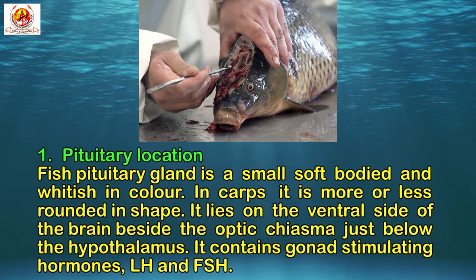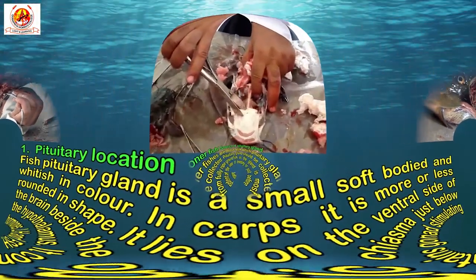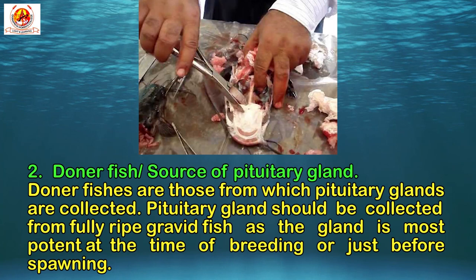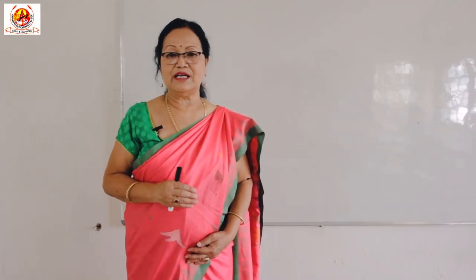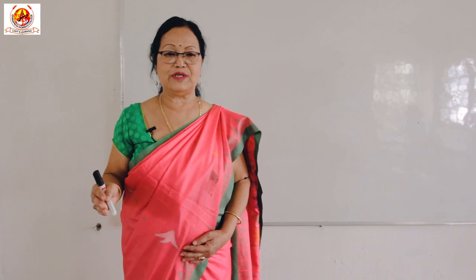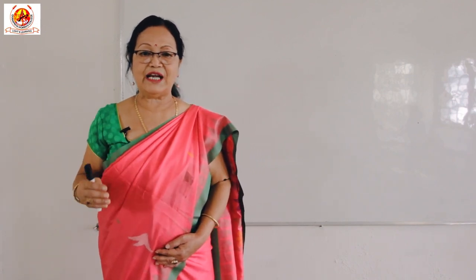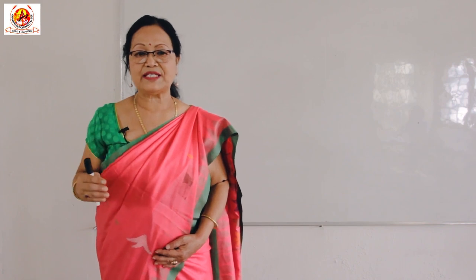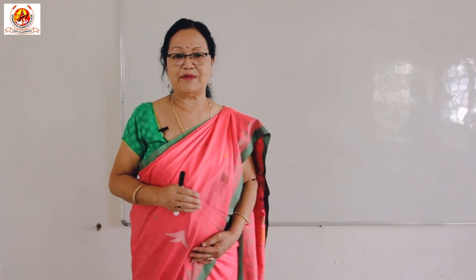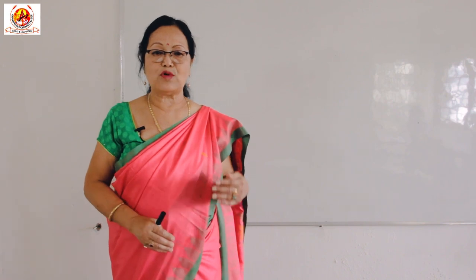Second point: the donor fish or source of pituitary gland. Donor fish are those from which pituitary glands are collected. Pituitary glands should be collected from fully ripe gravid fish, as the gland is most potent at the time of breeding or just before spawning. Suitable period for collection of glands for Indian carp is from May to July when the majority of fish reach an advanced stage of maturity. Recently killed live fish are considered the best donors. However, glands can also be collected from donor fish which are well preserved in ice or cold storage.